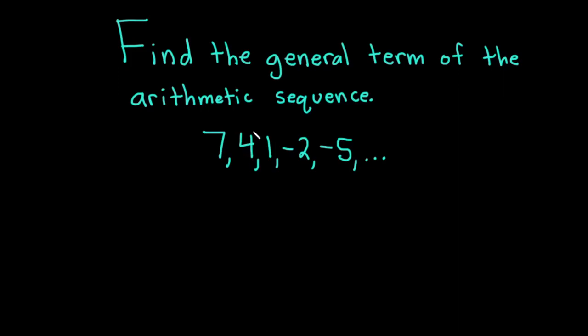Hi, in this video we're going to do a problem involving arithmetic sequences. The question is to find the general term of the arithmetic sequence. The sequence is 7, 4, 1, negative 2, and negative 5, and it goes on forever.